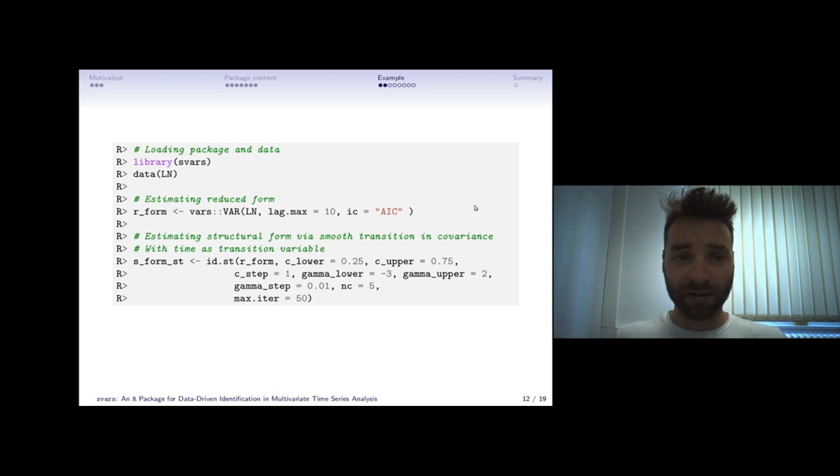This data set comes directly with the package, it's one of our example data sets. Once you have loaded the data set and the package, you can estimate the reduced form with the vars package. So obtaining the reduced form R form, this object can be directly passed to the smooth transition model without any further specification, even though I did some specifications here but this is completely optional.